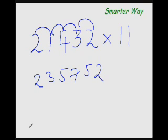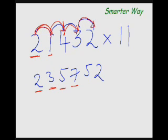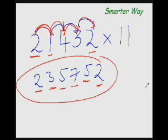slow motion action replay of what I have just done. The trick is: just copy the first digit as it is. The next digit would be the sum of this digit and the next digit, so 2 + 1 = 3. Next, it would be the sum of 1 and the next digit: 1 + 4 = 5. Next would be 4 + 3 = 7. The next one would be 3 + 2 = 5. And copy the last digit as it is. See, isn't that